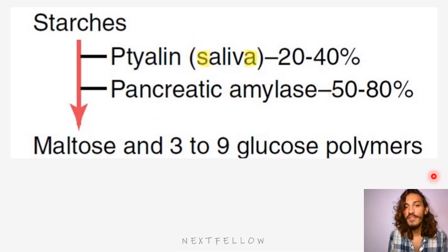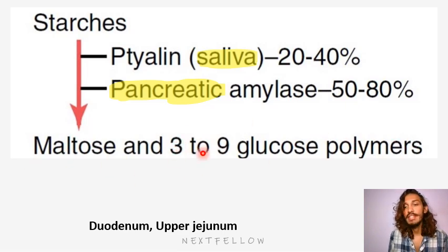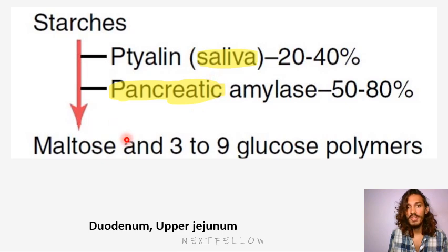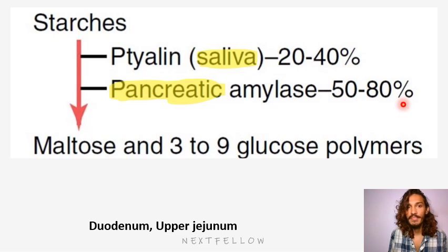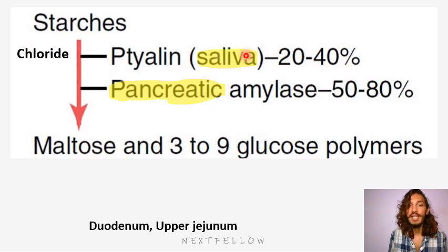By the time you finally reach the duodenum and upper jejunum, the final products that will be there will be maltose and those 3-9 glucose polymers seen earlier — so glucose polymers, maltotriose, and maltose. When you talk about carbohydrate digestion, majority of the activity is already done by ptyalin and pancreatic amylase. Also, just remember that for the activation of these amylases, you need chloride — chloride is essential for activity of salivary as well as pancreatic amylase.